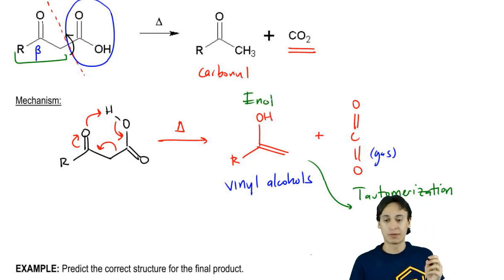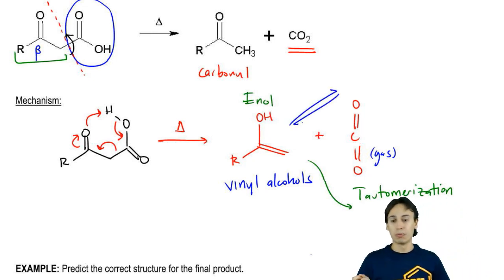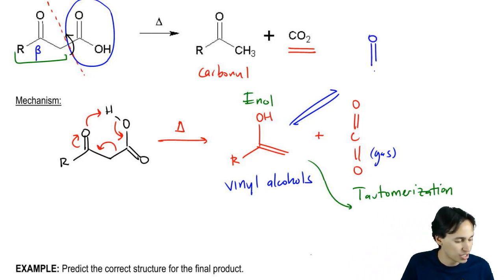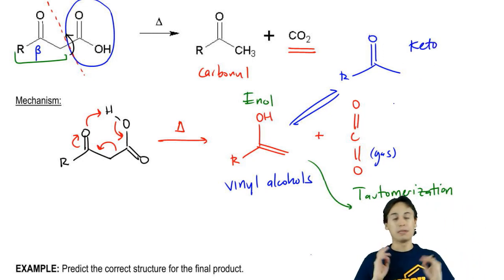Enol or enolate chemistry is a huge deal. You're going to get there if you haven't yet. The whole point being that when you tautomerize, what you do is you switch the locations of a double bond and a hydrogen. What this actually becomes after tautomerization is this - the keto form. You wind up getting the ketone. Just take my word for it that it tautomerizes and then you're fine.